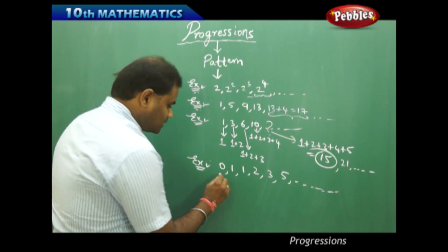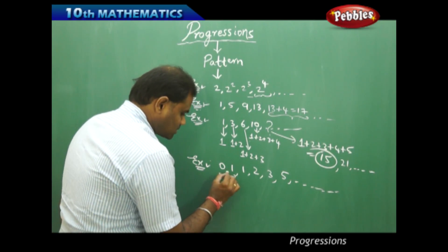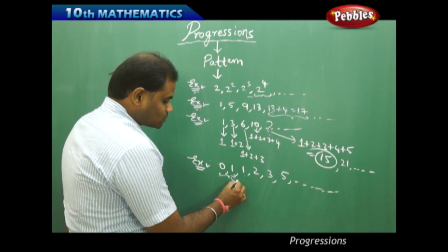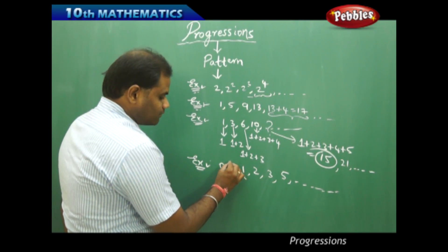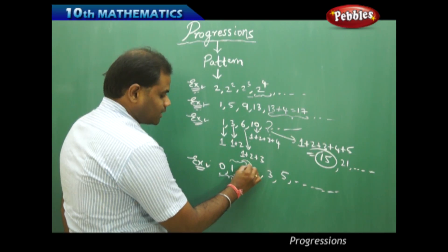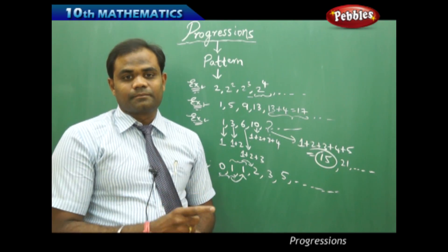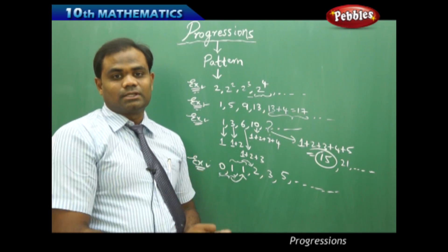So in this case, as I see here, when I take the first two terms, when I add the two terms, 0 plus 1 is 1. So when I add the first two terms, it gives me the next term. And when I add these two terms, it gives me the next term. That is, the next term is obtained by adding the previous two successive terms.